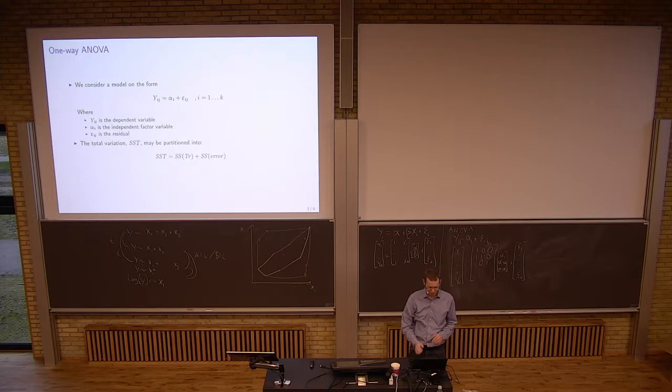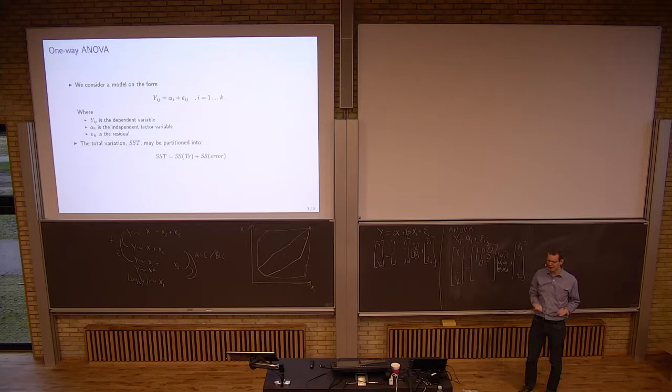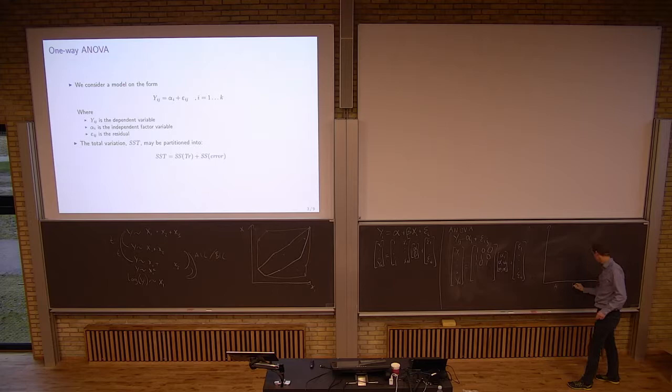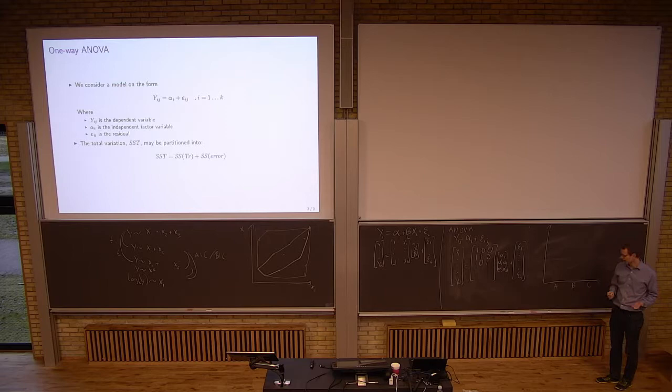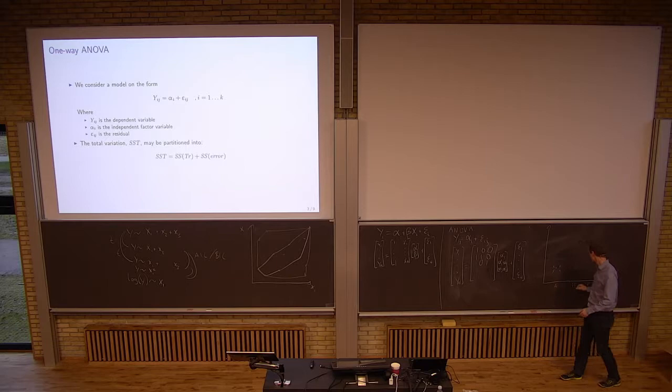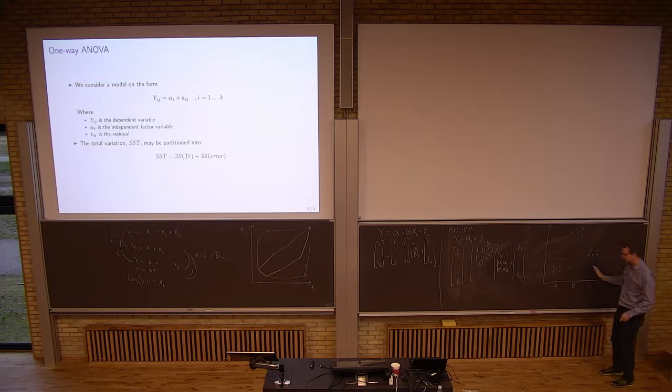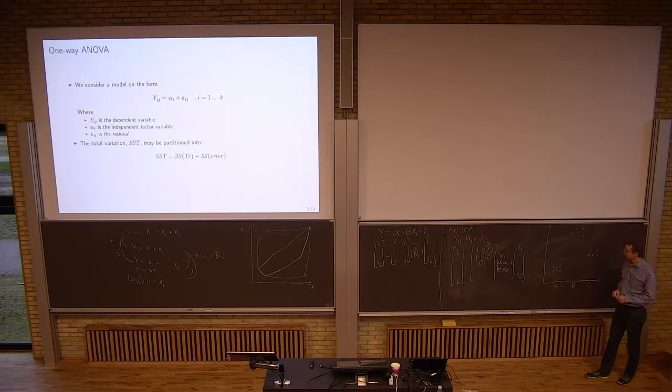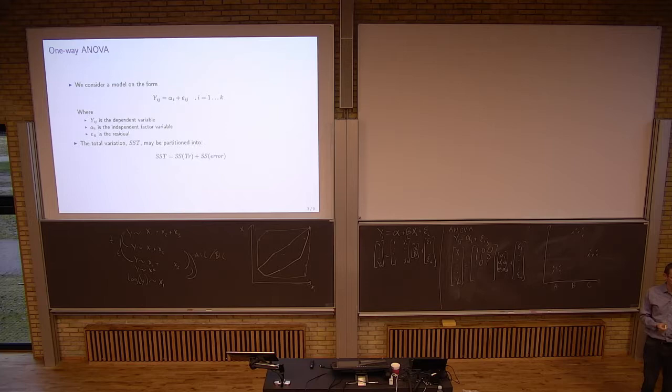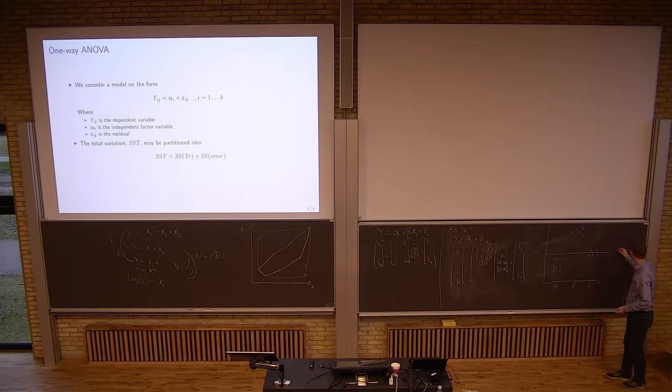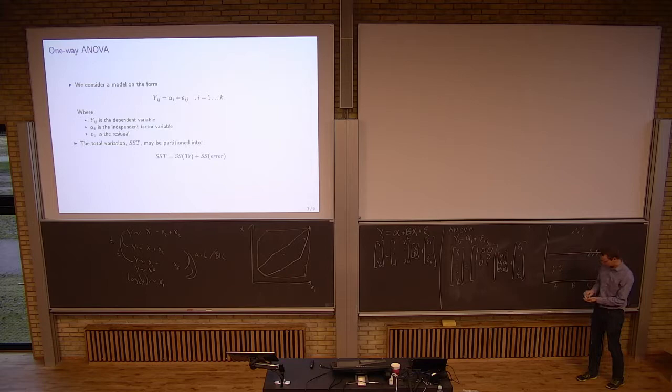But what you typically do when you look at this is that you say you have the total variation. So what you have is you have some groups. Let's call them A, B, and C. And then you have some observations from each group. So there's no x-axis here. It's just observations within each of the groups. What is the total variation, the total sum of squares? That is, you take the global mean value and then you look at the residual sum of squares to that.